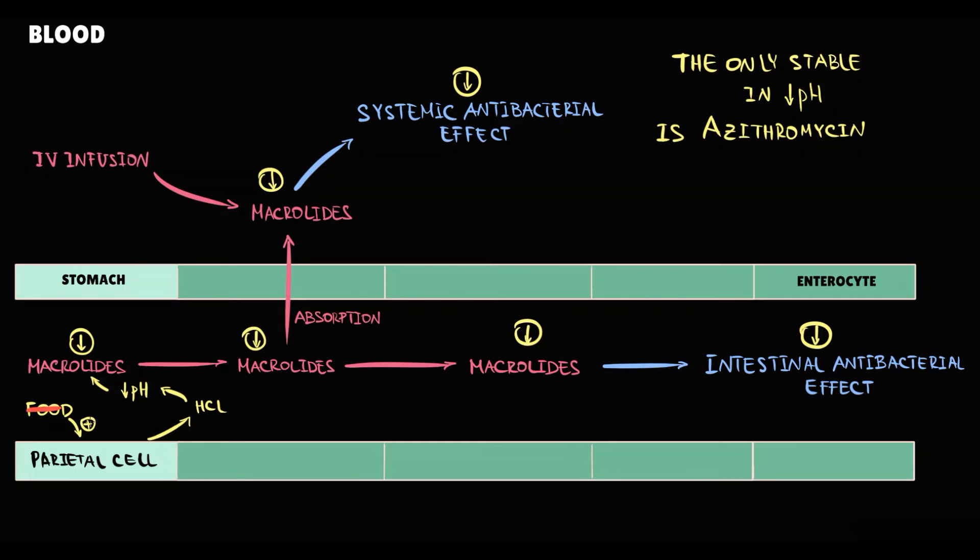Because without food, gastric acid production will decrease, thereby pH will be higher. And the higher the pH, the lower is macrolide's destruction. Thereby, more macrolides are left for intestinal absorption, and the greater will be the systemic and intestinal antibacterial effect.